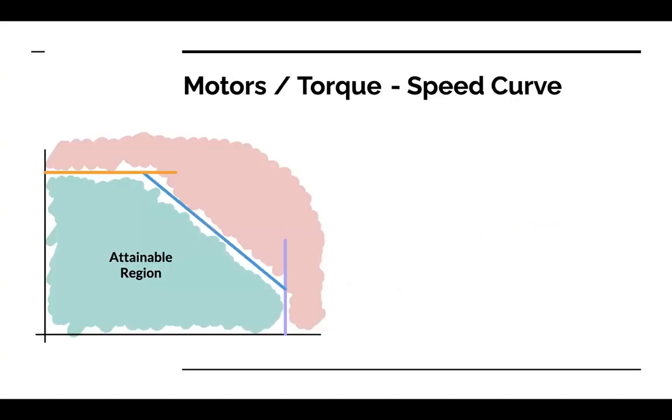First, we wanted to describe a motor's performance characteristics for those who aren't familiar. A motor's performance characteristics are shown by its torque speed curve, which tells us what torque the motor can produce at a certain speed. The torque speed curve has three limits.